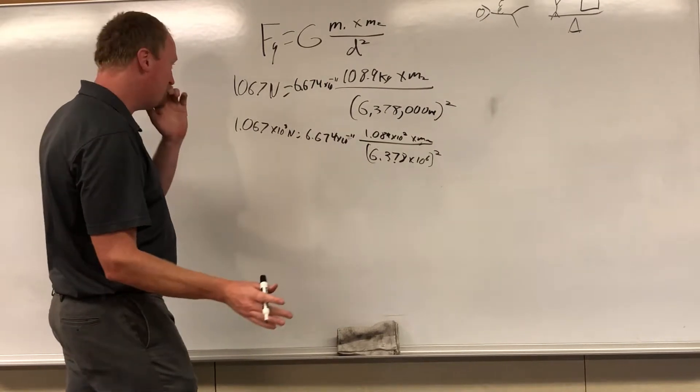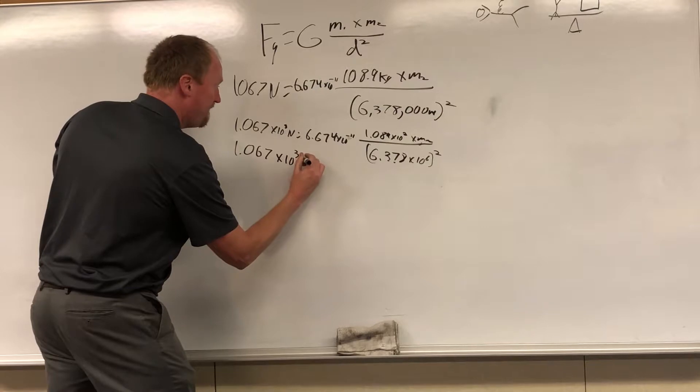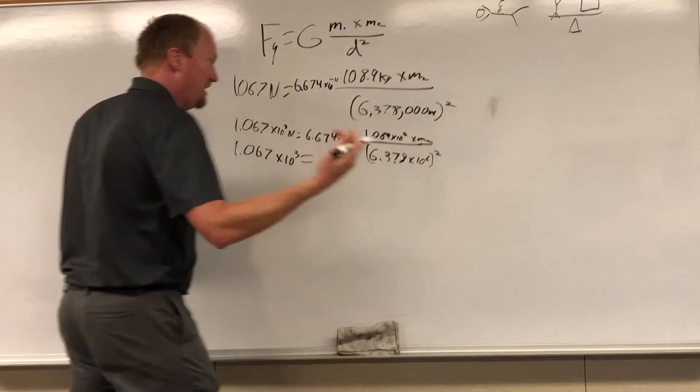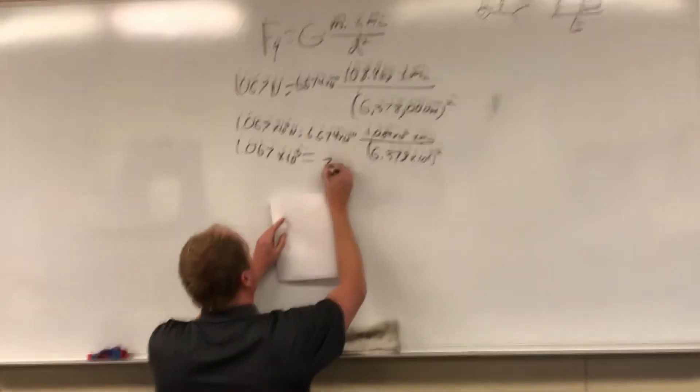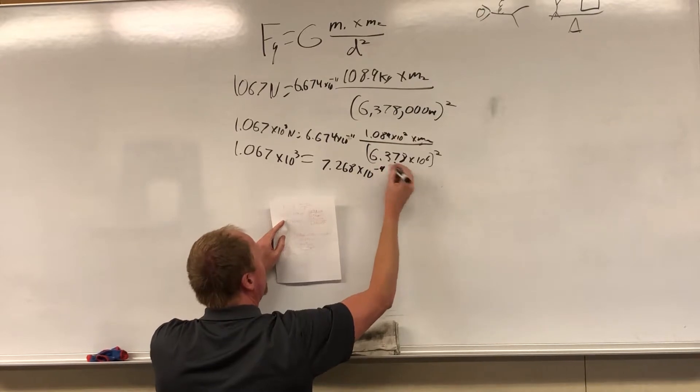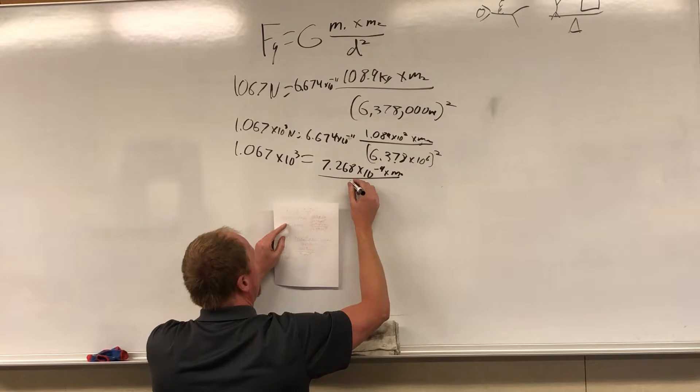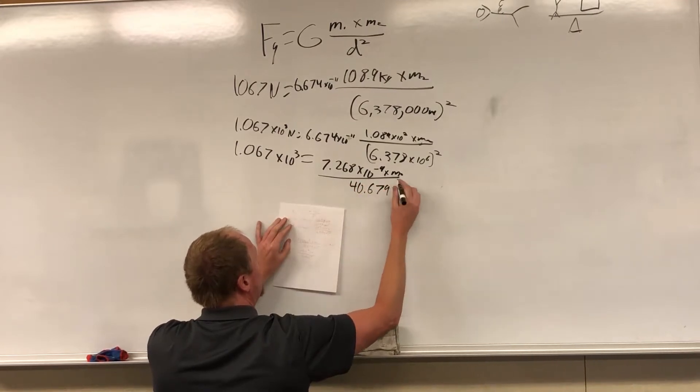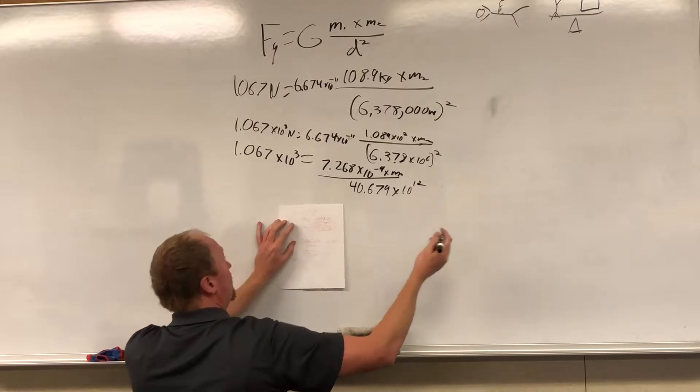So I'm going to start doing the math here. The gravitational constant times my mass, multiply that together, I get 6.67 times 1.089 gives me 7.268 times 10 to the negative 11 plus 2 is negative 9, all over times m2, that's what we're trying to find, that's the mass of the Earth. 6.378 squared gives me 40.6796 times 10 to the 6 times 10 to the 6 is 10 to the 12.